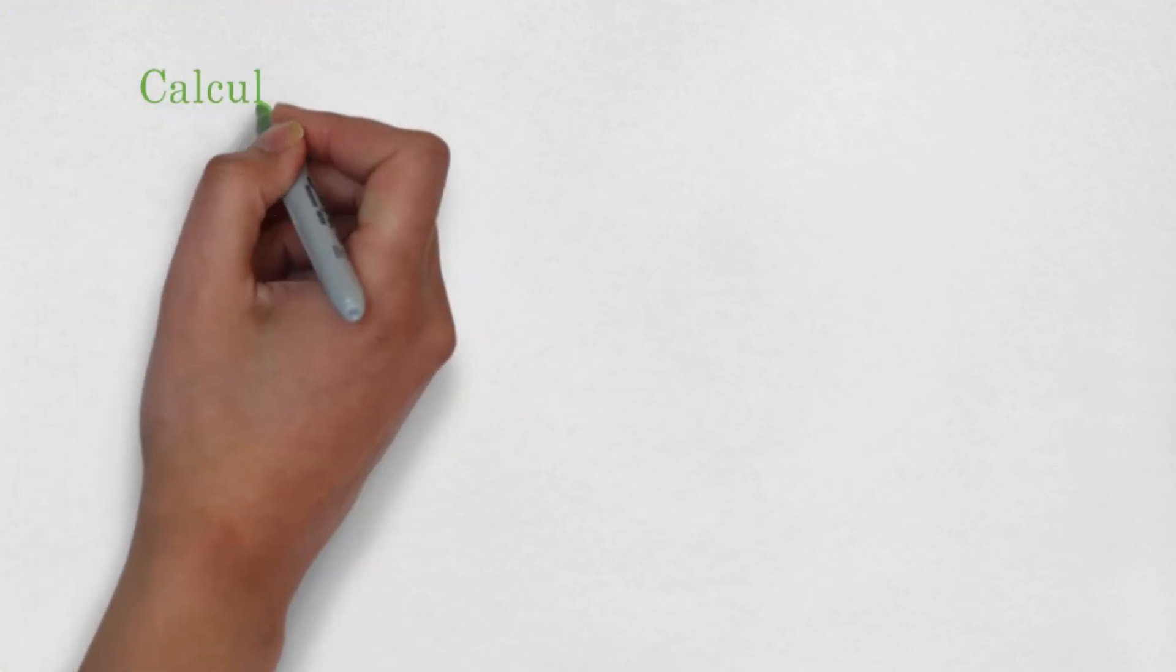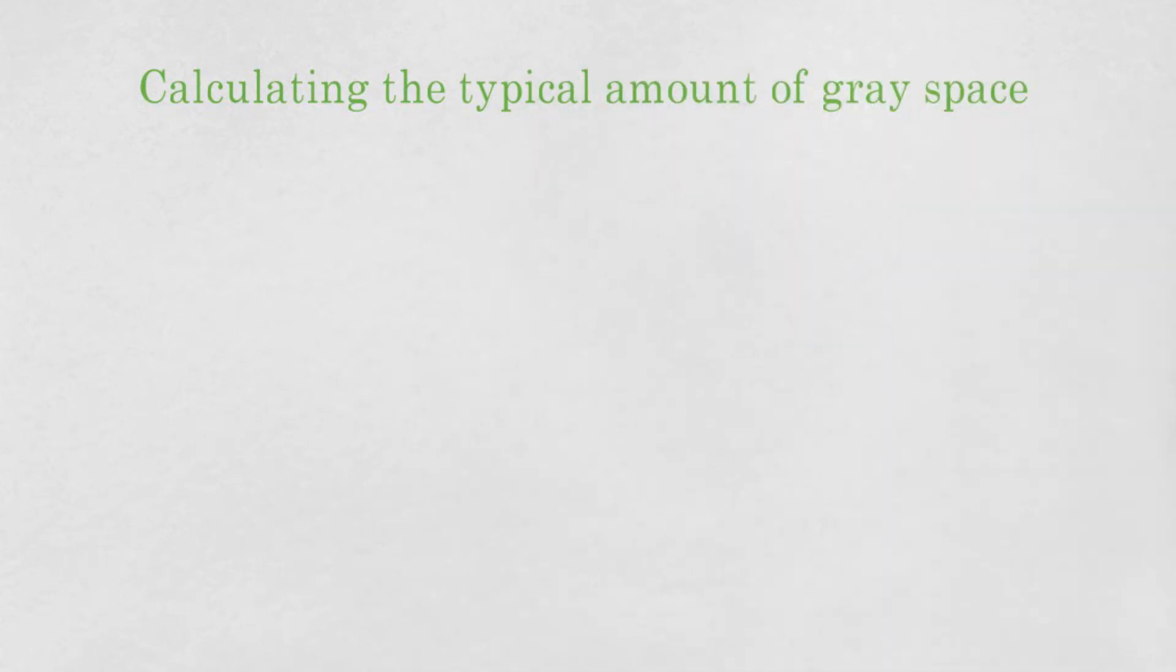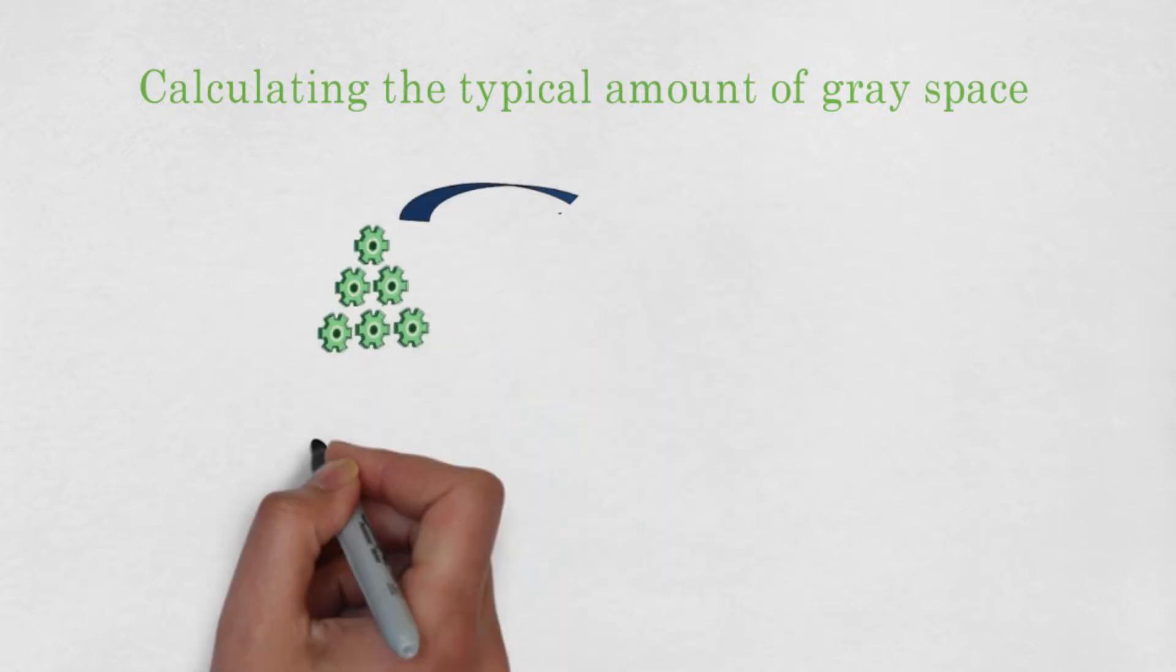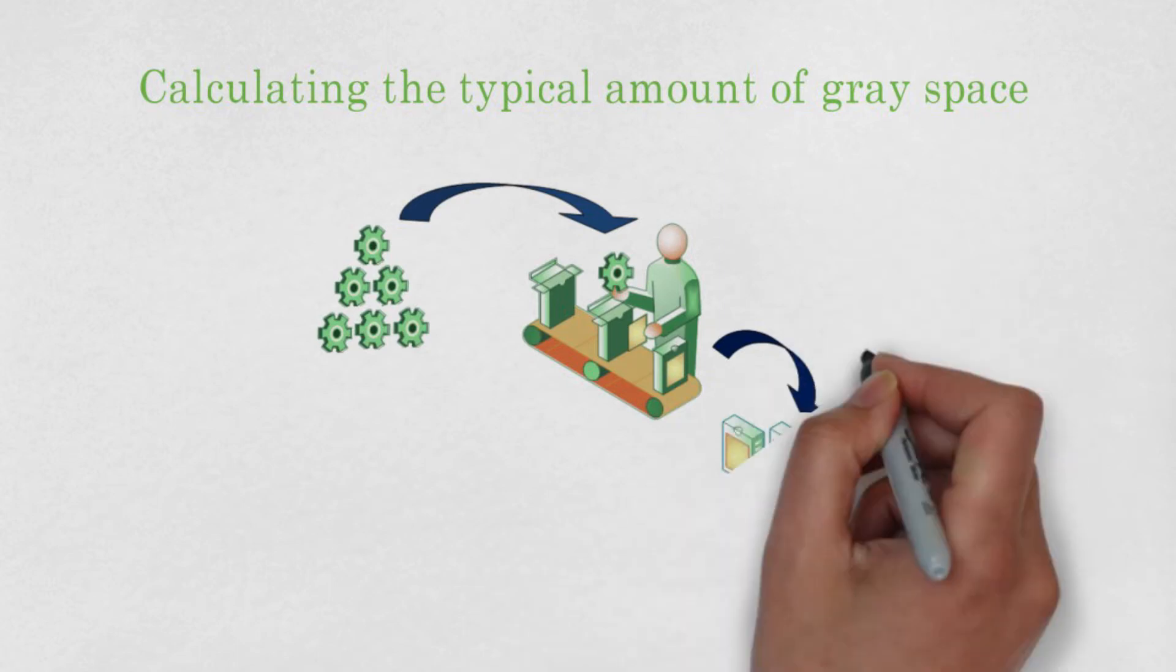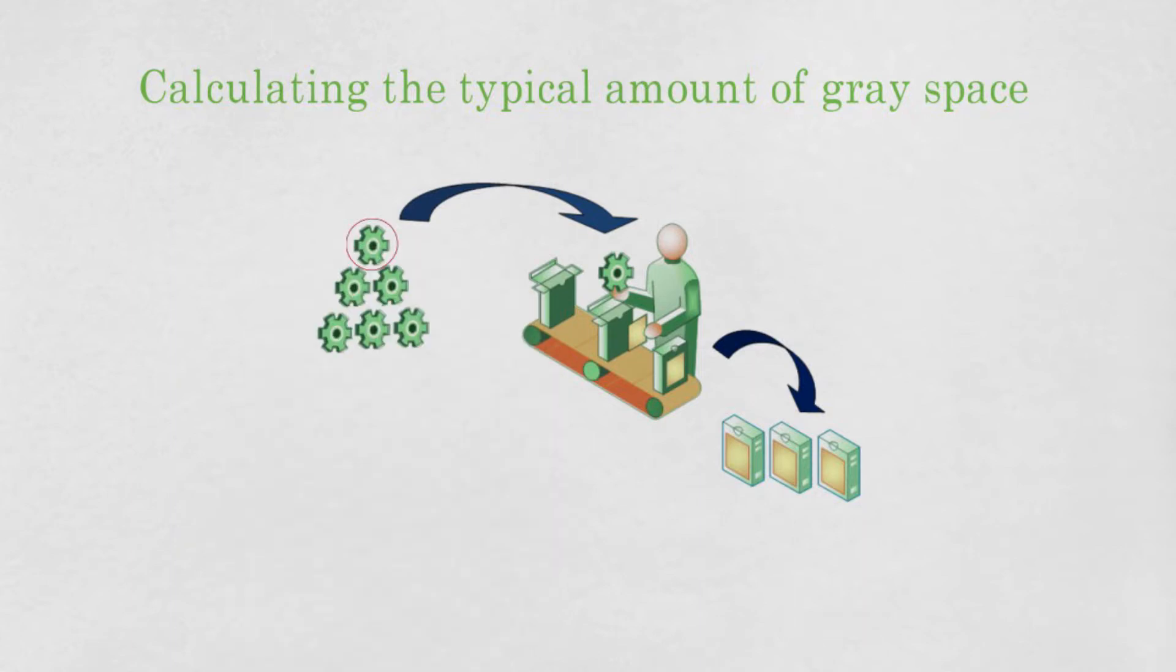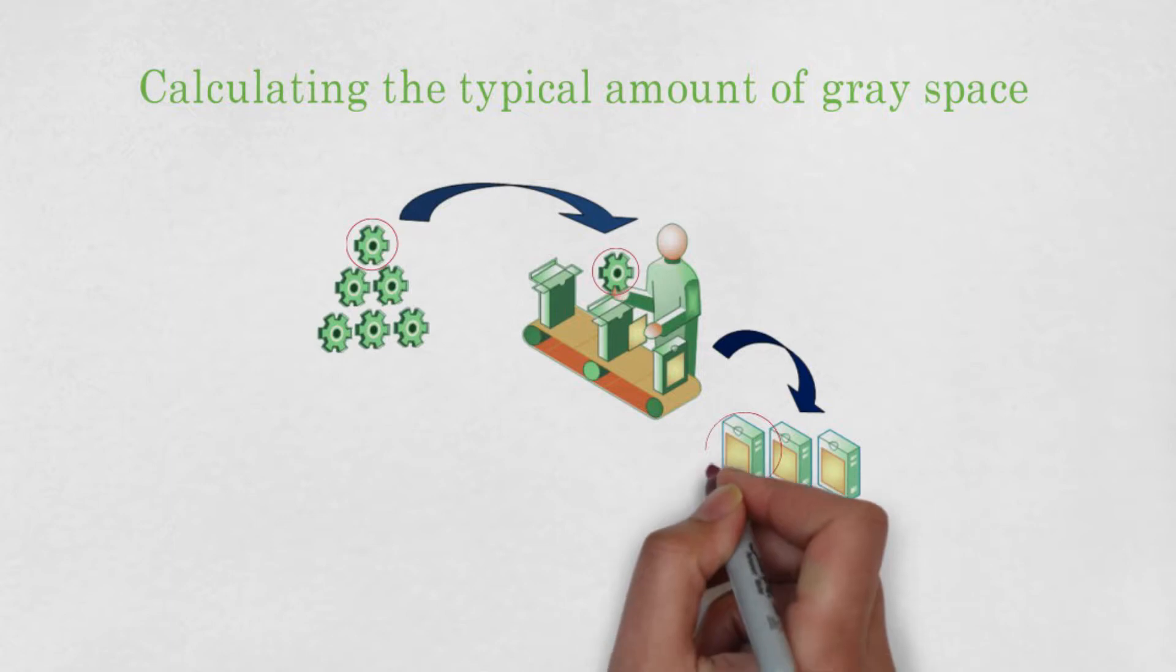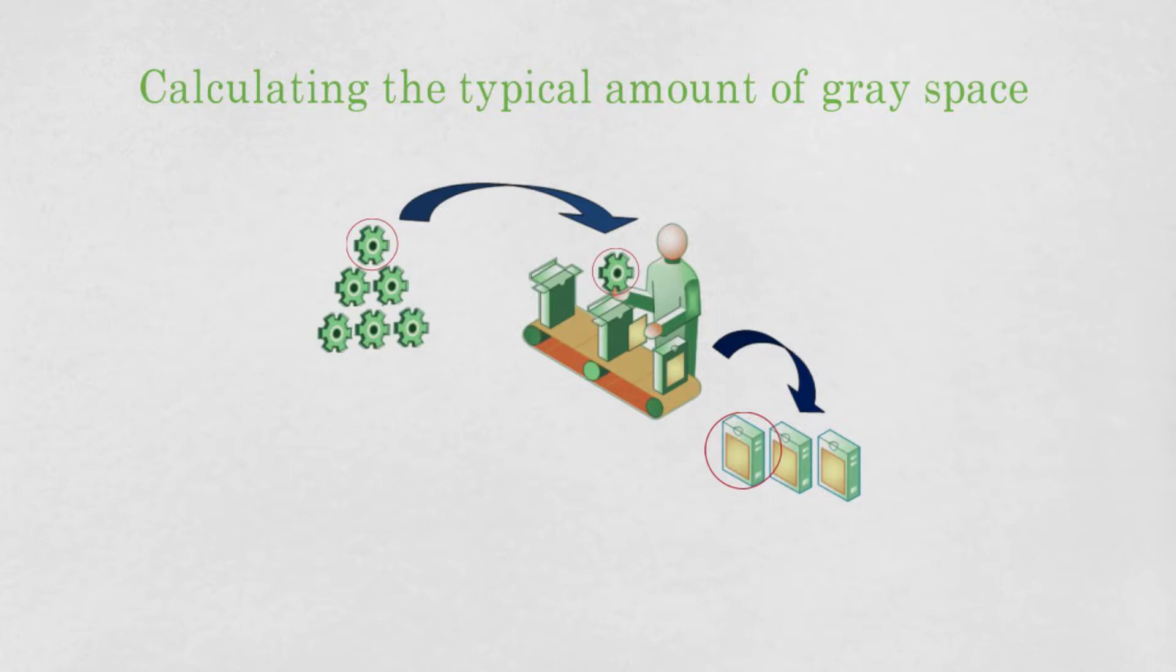Now it's time to explain how you should calculate the typical amount of gray space. Gray space illustrates the total time when someone is actually working on the order. An important rule here is that you only count the time needed to make one end item. So if parts are made in batches, you should not count the process time for the whole batch, but only for the process time related to one end item. Besides, the setup time for this particular item should also be included in the gray space.